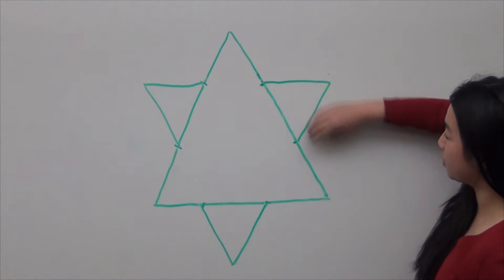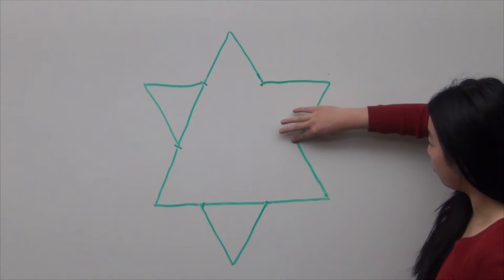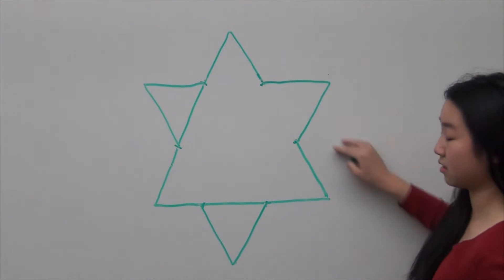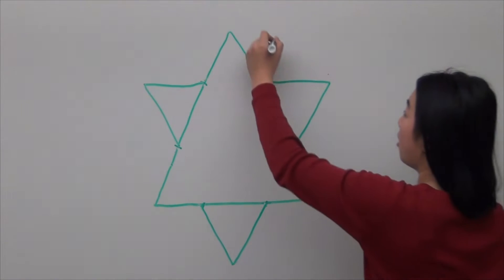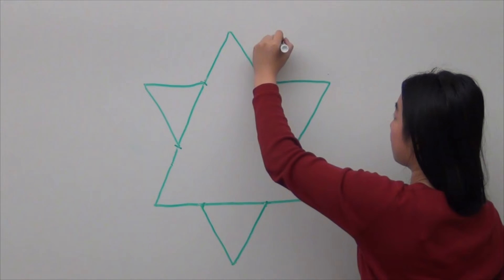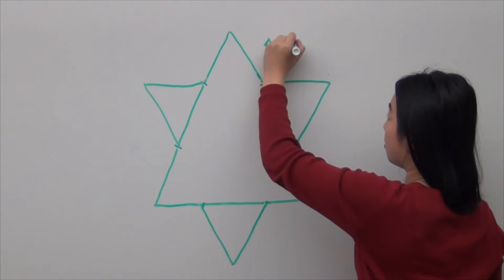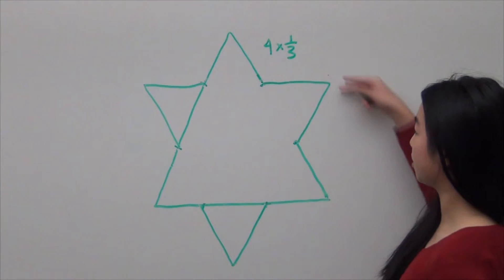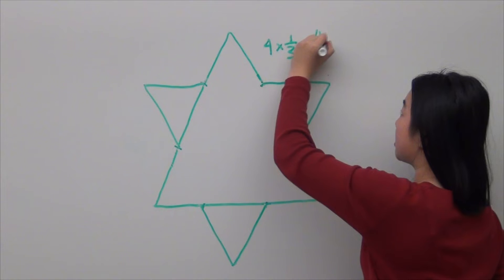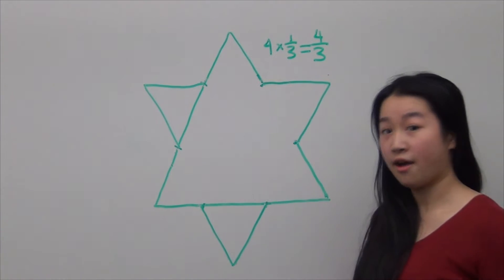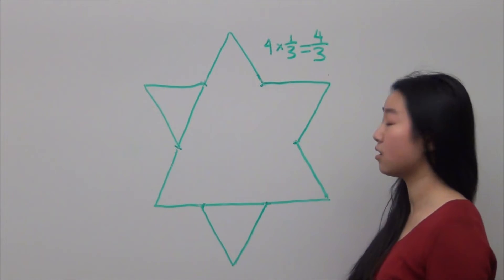From each original side, we now have four lengths of one-third. So with each new iteration, we have four sides times one-third, which is the length of each of these sides. So with each iteration, the perimeter increases by a factor of four-thirds. Every iteration, the perimeter increases all the way to infinity.